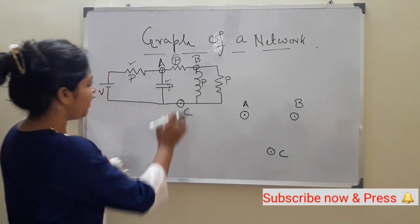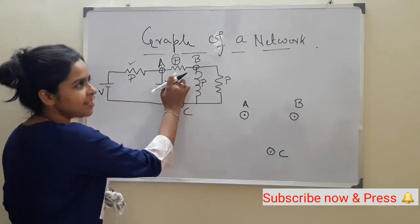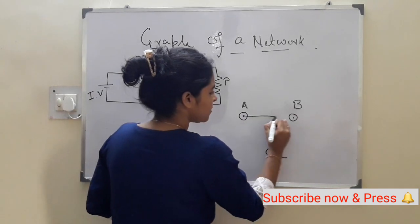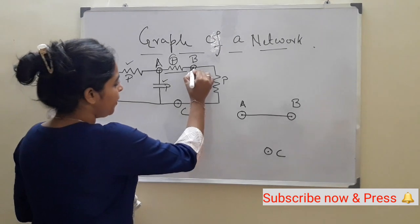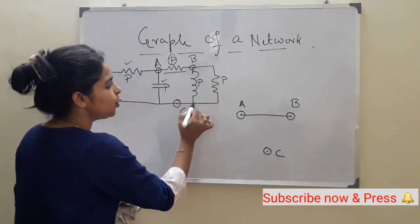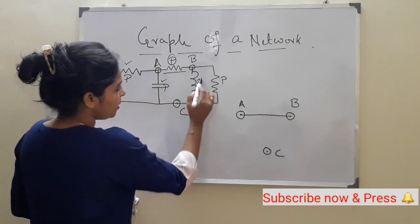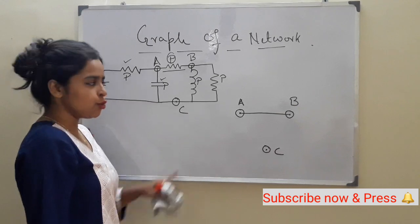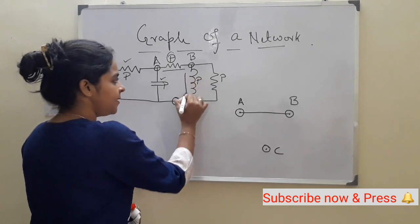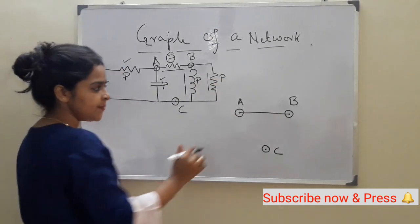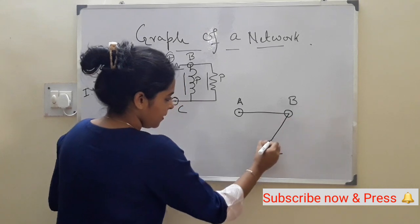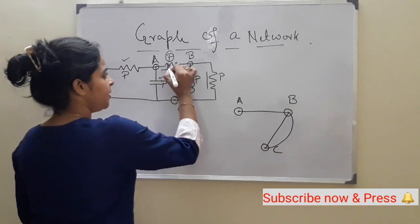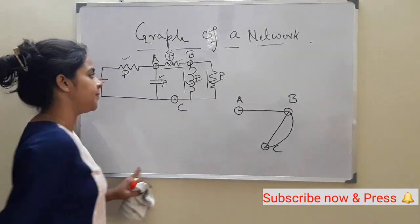Passive elements will be represented by a line segment. Between A and B there is a passive element — the resistor — so this portion will be represented by a line segment. Between B and C there are two branches: one branch has an inductor and another has a resistor. Both are passive elements, so both will be represented by line segments — one for the inductor and one for the resistor.